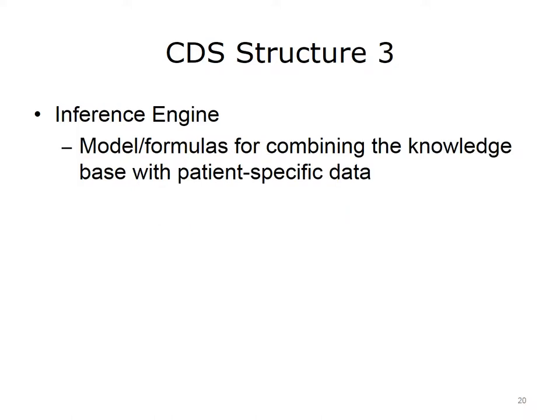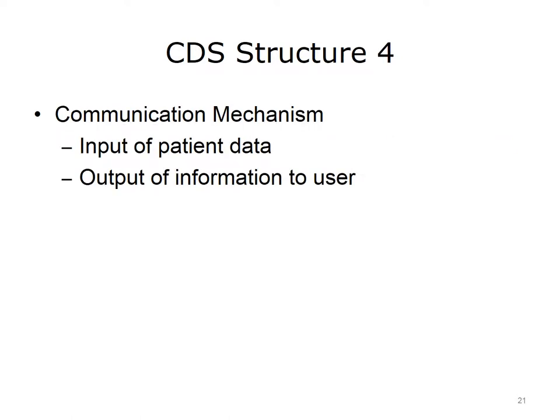The second part is called the inference engine, which contains the formula for combining the rules or associations in the knowledge base with actual patient data. Finally, there has to be a communication mechanism — a way of getting the patient data into the system and getting the output of the system to the user who will make the actual decision. Let's look at some examples.